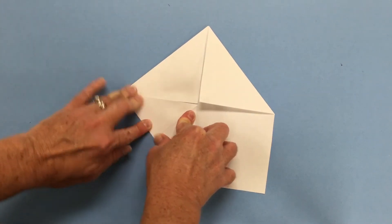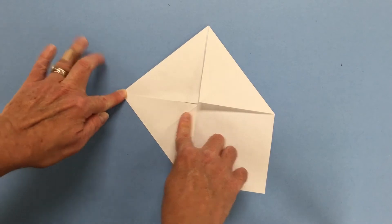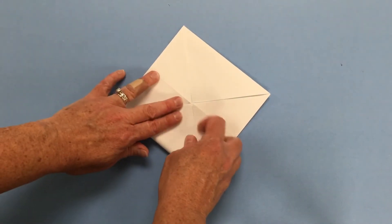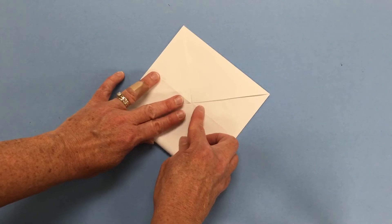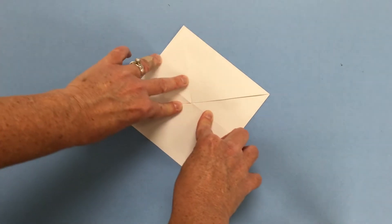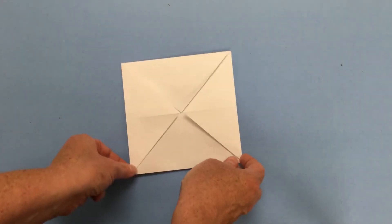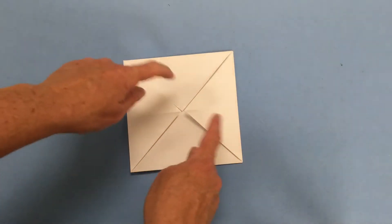Okay, and then we're going to turn it and do the same thing with the next corner. Bring that to the middle and give it a nice firm crease and the same thing with the last corner. We're going to bring that to the middle also and give that a nice firm crease. Okay, so now we have another square with all those little triangle points in the middle.